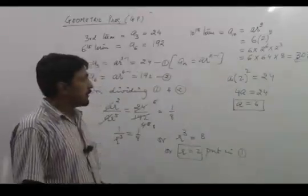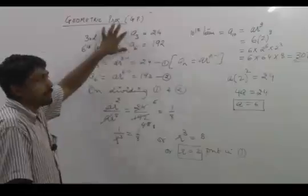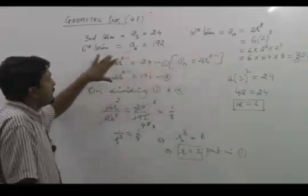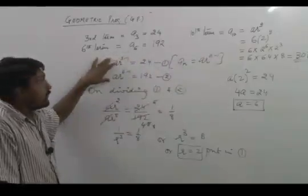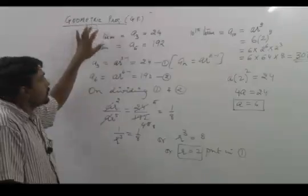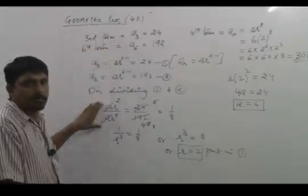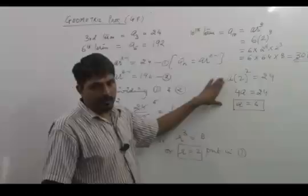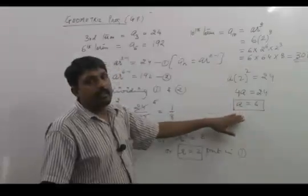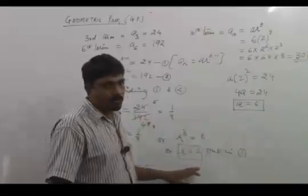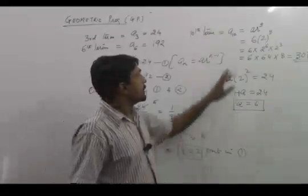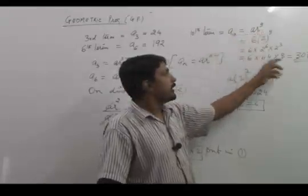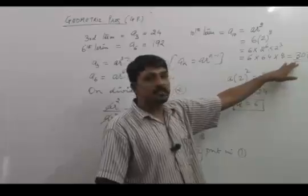So what we do is first write the formula, use the nth term formula. In a geometric progression, we always divide the equations. After dividing we get r, then put the value of r in one of the equations to find a. If we have the first term and common ratio, we can find any term. Since we're asked for the 10th term, we put the values and get 3072 as the required answer.